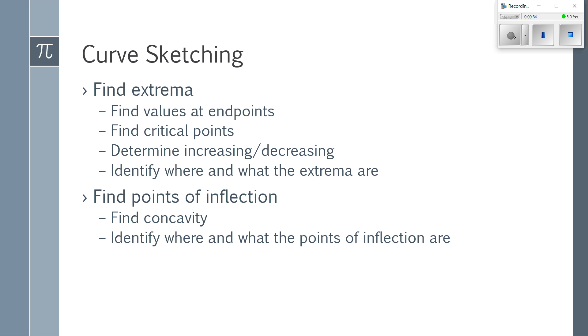But this is the method of how functions were graphed after Newton and Leibniz created calculus and before we had graphing calculators to do all this work for us. It gives us accurate sketches of graphs. So the idea is we start by finding extrema: find function values at endpoints, find critical points, determine where the function is increasing and decreasing and where and what the extrema are. Then find points of inflection: find concavity and identify where and what the points of inflection are. Graph all these different points and connect them following increasing concave up, increasing concave down, decreasing concave up, or decreasing concave down.